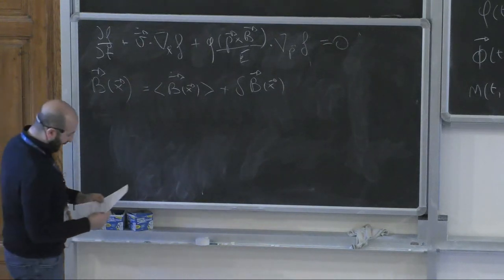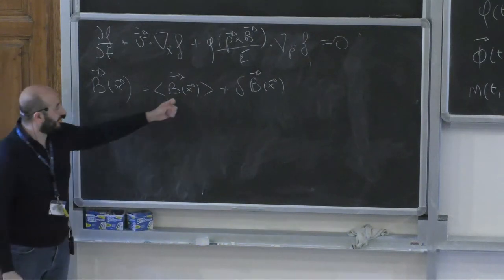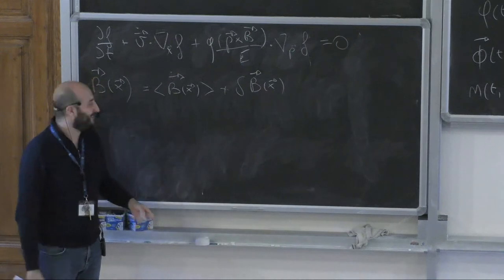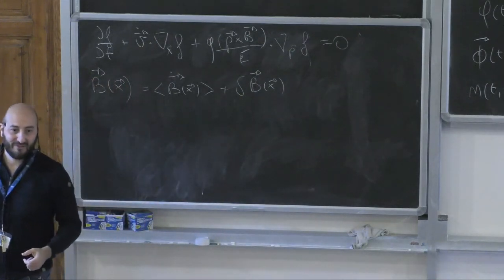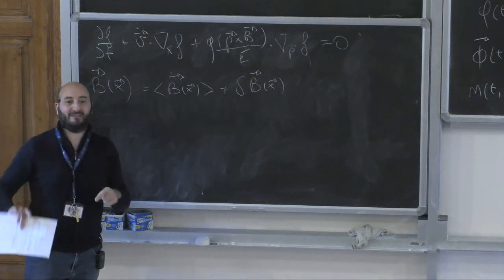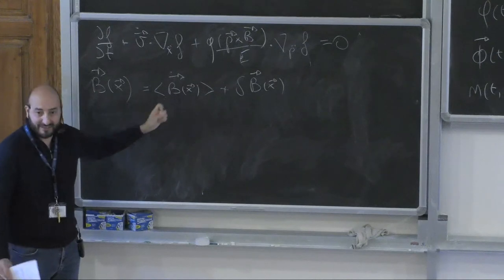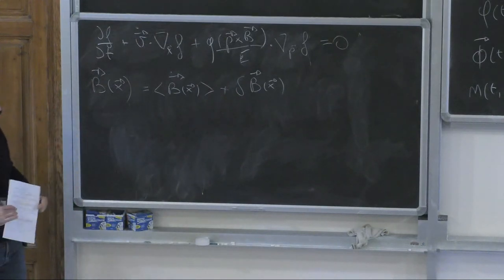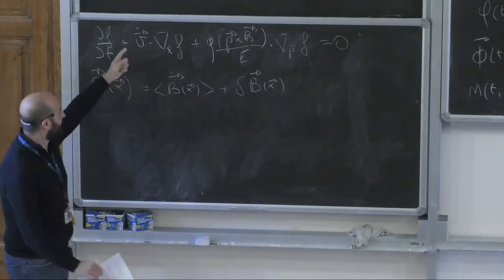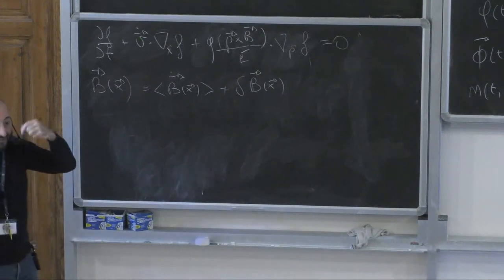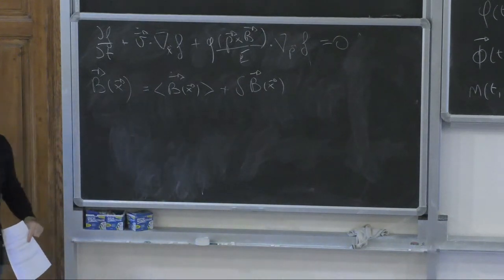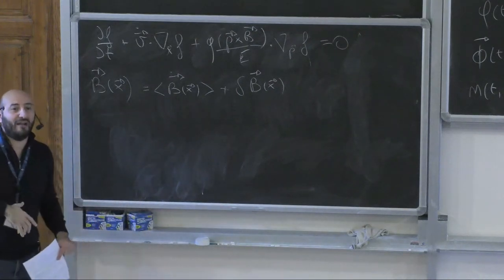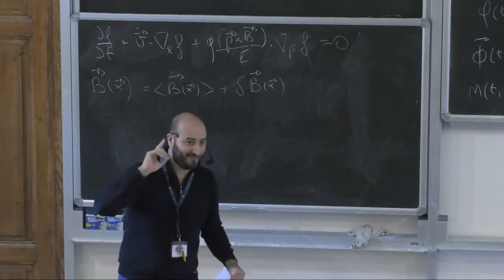In practice this is an ensemble average. If we were to generate an infinite number of galaxies, each with a realization of these fluctuations, the average among them would give the mean field. But this is a fictitious thing — it does not exist in nature. What exists in nature is the specific realization, but we do not know it. So let's see what happens to the distribution function when we perform this ensemble average.